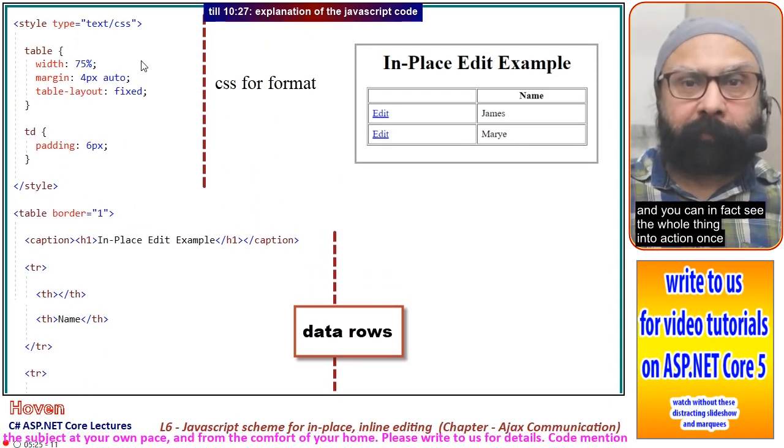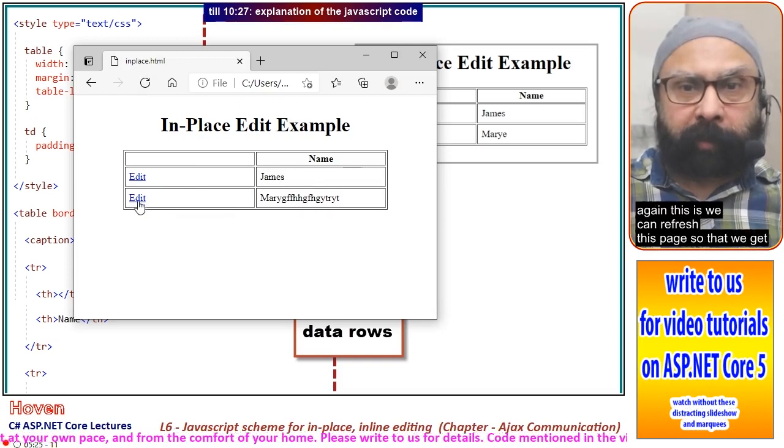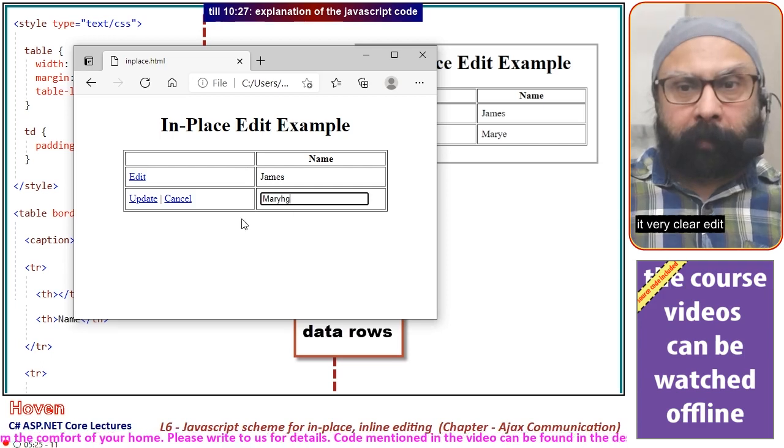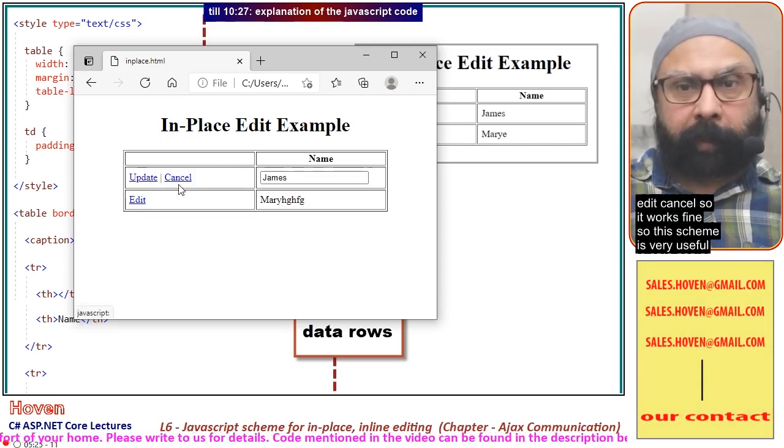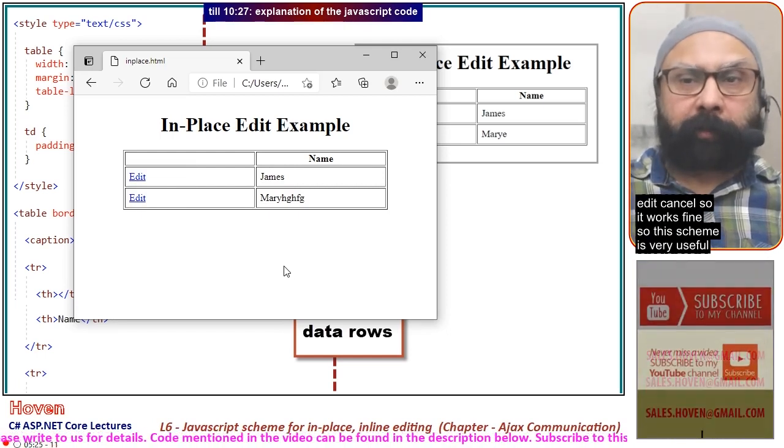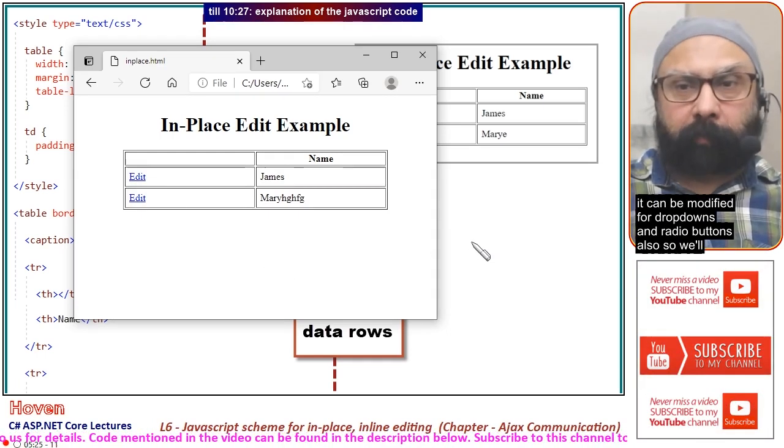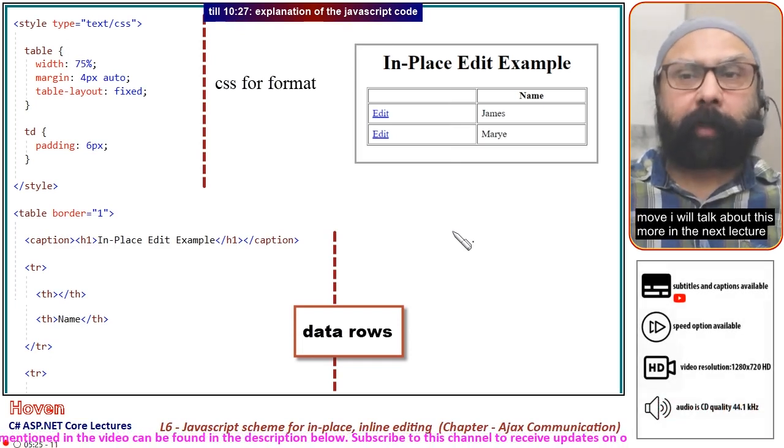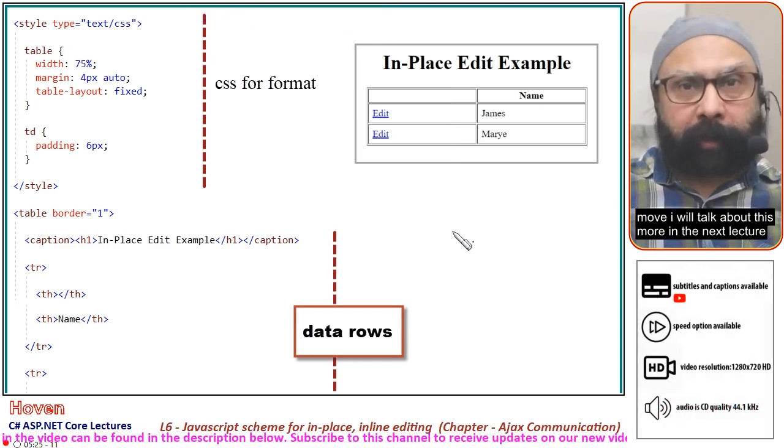You can see the whole thing in action once again. We can refresh this page to see it clearly: edit, update, edit, cancel. It works fine. This scheme is very useful and can be modified for dropdowns and radio buttons also. I will talk about this more in the next lecture. Thank you.